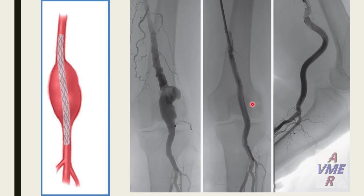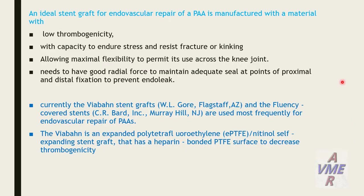Picture showing exclusion of the aneurysm using a covered graft, and picture of the aneurysm after exclusion in bending position. An ideal graft for endovascular repair of popliteal artery should have low thrombogenicity, capacity to endure stress and resist fracture or kinking, allow maximum flexibility to cross the joint, and good radial force to maintain adequate apposition at proximal and distal fixation points to prevent endoleak. Covered stent grafts including ePTFE-covered stents are used most frequently for endovascular repair.